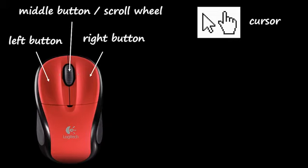By far the most important button is the left mouse button — it's the one you'll be clicking the most. If you're right-handed, you should be clicking it with your index finger. If you're left-handed, most mice you can configure so that the buttons are swapped. A lot of left-handed users just get used to using the mouse with their right hand, or simply learn to click with their ring finger rather than their index finger.